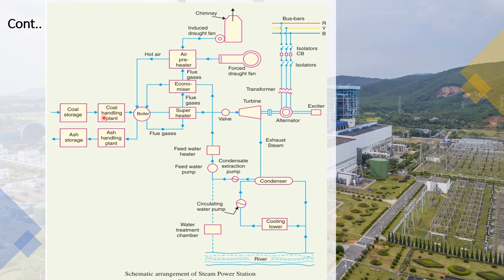When the coal is pulverized, the coal handling plant feeds it to the boiler. The ash from the boiler goes to the ash handling plant and then to ash storage. Water is used to remove the ash, and steam is generated using the heat from the superheater.